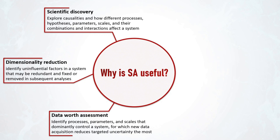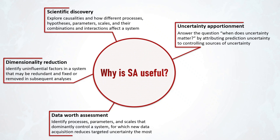Another possible purpose is data worth assessment by identifying processes, parameters, and scales that dominate control over a system, for which new data acquisition reduces targeted uncertainty the most. That also relates to a more general purpose — uncertainty apportionment — which aims to answer a critical question: when does uncertainty matter? By attributing prediction uncertainty to controlling sources of uncertainty to identify which ones matter the most.